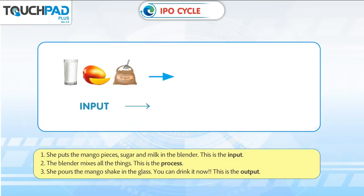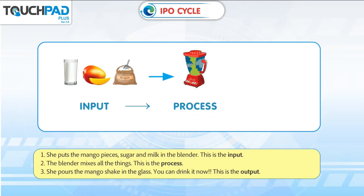She puts the mango pieces, sugar, and milk in the blender. This is the input. The blender mixes all the things. This is the process.